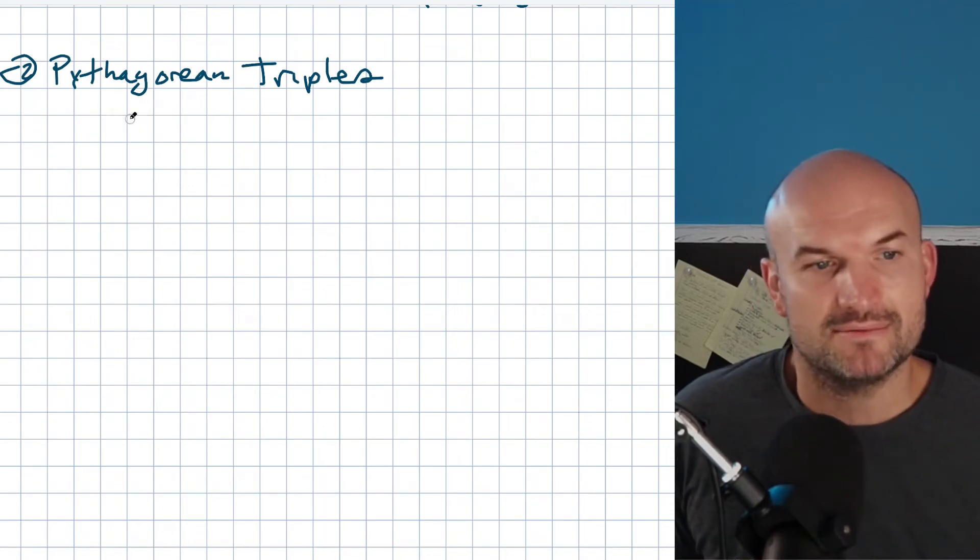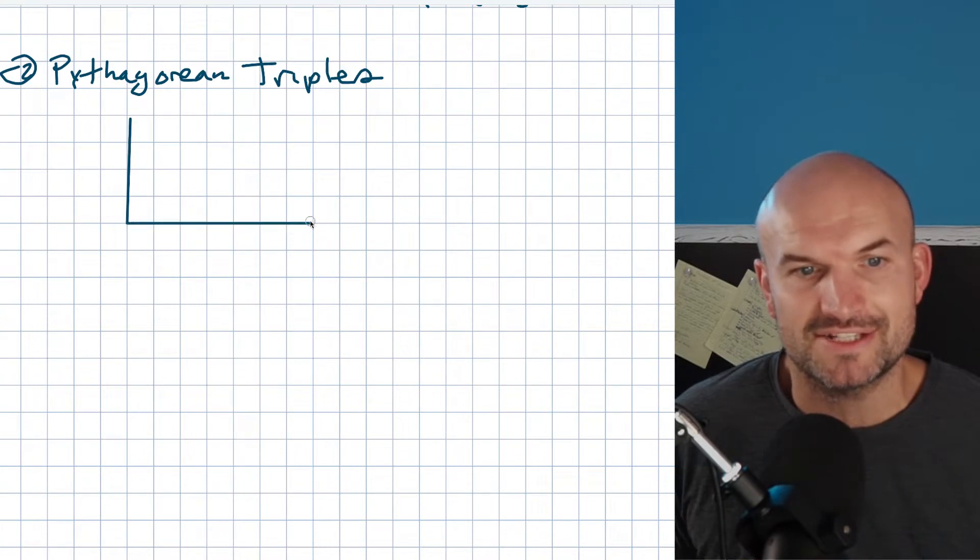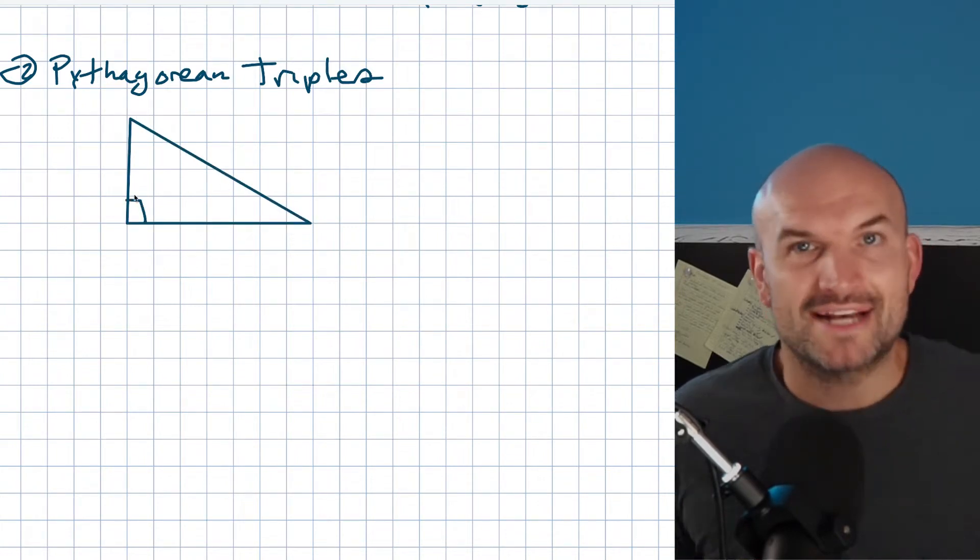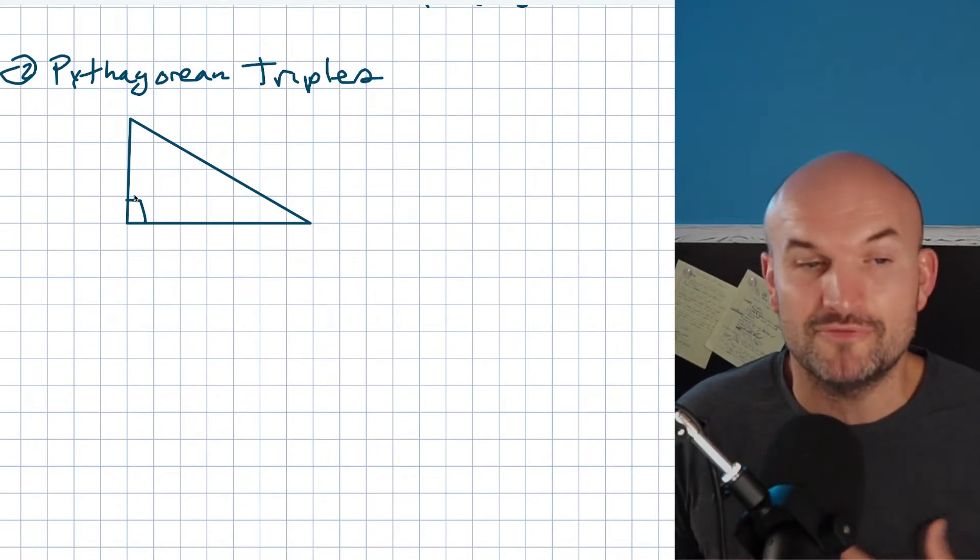The next thing that's really cool about right triangles is when we have Pythagorean triples. You can recognize in the last two examples I did, we had radicals as one of our side lengths, and that can sometimes be kind of confusing.